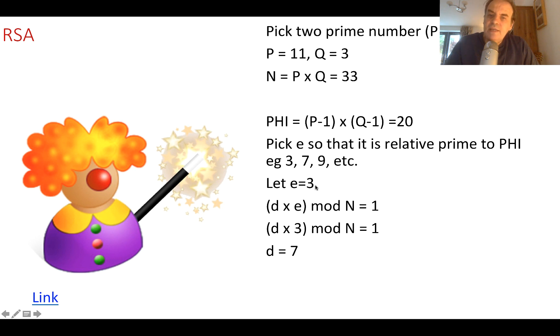So let's pick 3. We pick 3. Now what must happen to be able to make sure the maths will work is that D, the decryption key, times E, the encryption key, mod N. Remember, mod N is the remainder of a divide, is equal to 1.